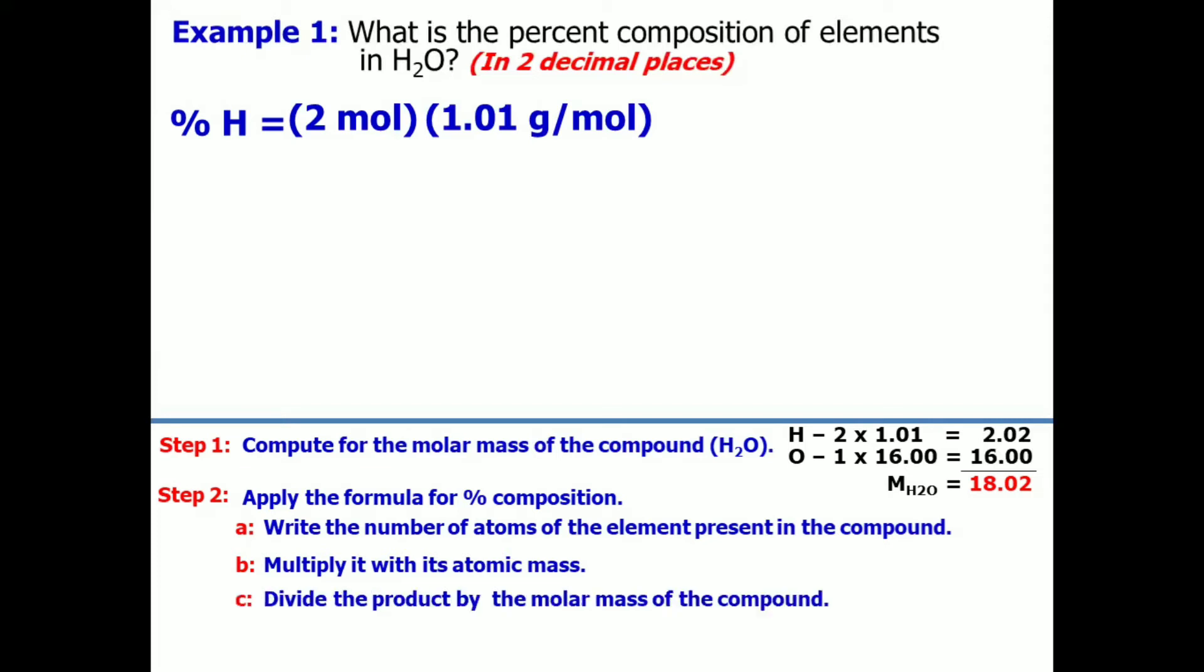Step C, divide the product by the molar mass of the compound. So, we already computed for the molar mass. And that is 18.02 grams. And lastly, we will multiply the quotient by 100.